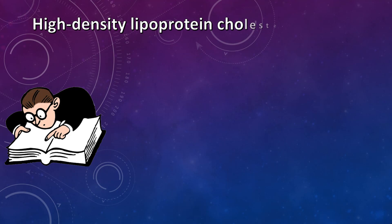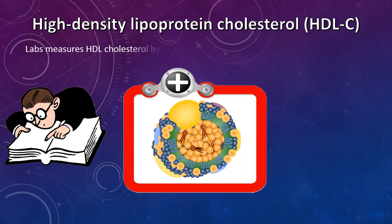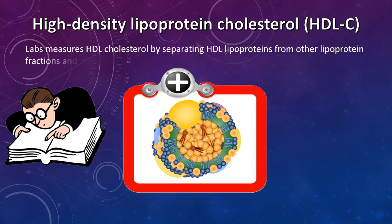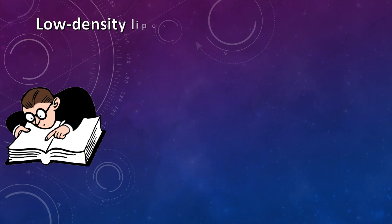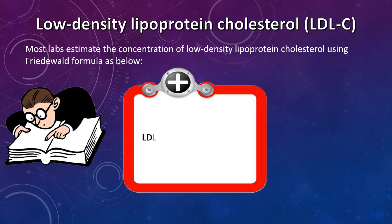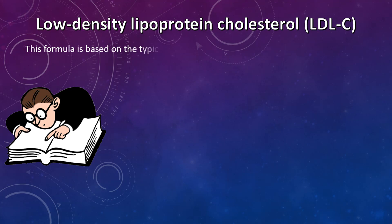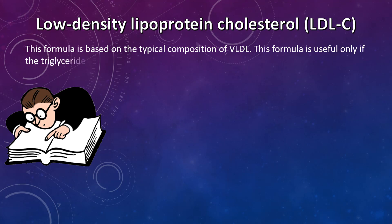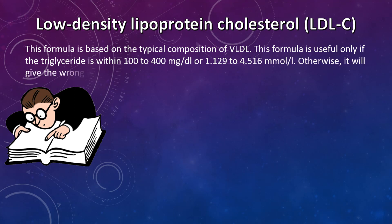Labs measure HDL cholesterol by separating HDL lipoproteins from other lipoprotein fractions and measuring the cholesterol in the HDL particles. Most labs estimate low density lipoprotein cholesterol (LDL-C) using the Friedewald formula: LDL-C = TC − HDL-C − (Triglyceride ÷ 5). This formula is based on the typical composition of VLDL and is useful only if triglycerides are within 100 to 400 mg/dL (1.129 to 4.516 mmol/L).